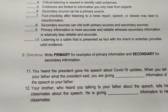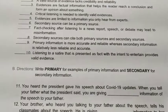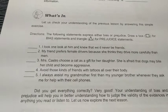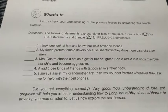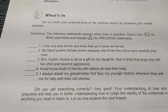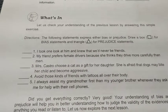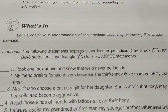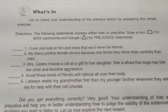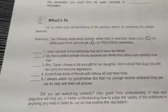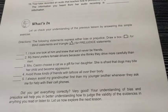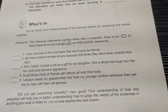Later we will identify the differences and the meanings of these terms. For 'What's In,' we will identify and review things discussed in the previous module — bias and prejudice. You will draw a box if it's bias and a triangle if it's prejudice. There are five items. If you still have confusion, you can go back to our previous video lesson or message your English teacher.